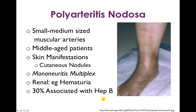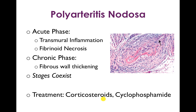About 30% of polyarteritis nodosa is associated with hepatitis B antigens, though it's unclear if this is causal. Classically, lesions are divided into an acute phase — characterized by transmural inflammation and fibrinoid necrosis — and a chronic phase characterized by fibrous wall thickening. Importantly, these stages coexist, meaning lesions can be acute and chronic simultaneously in the same patient. Treatment is corticosteroids and cyclophosphamide.